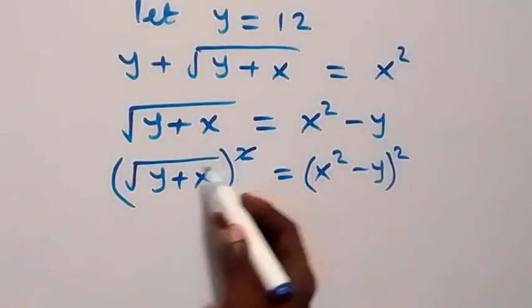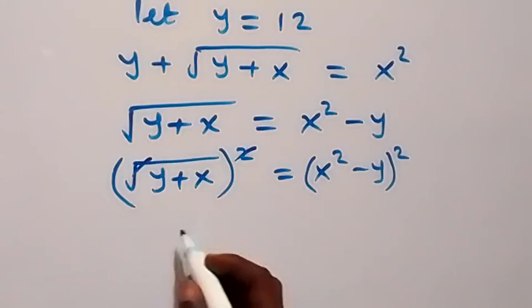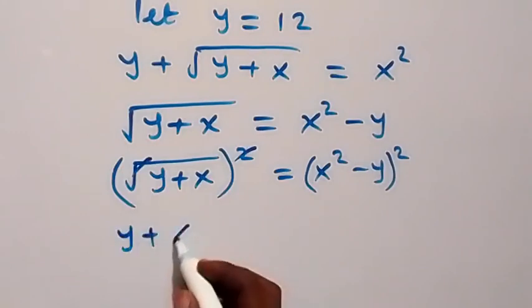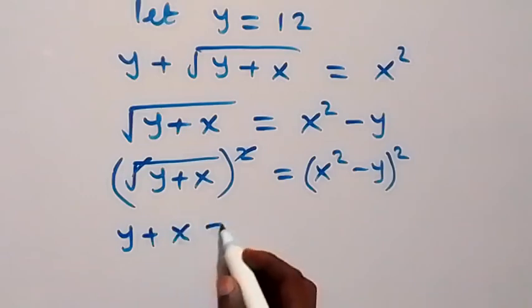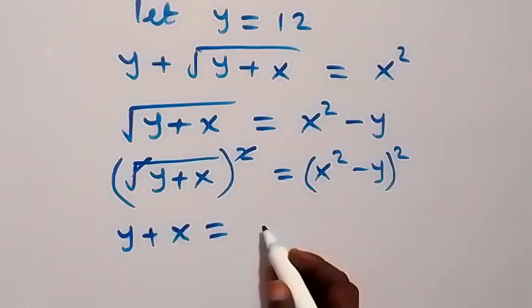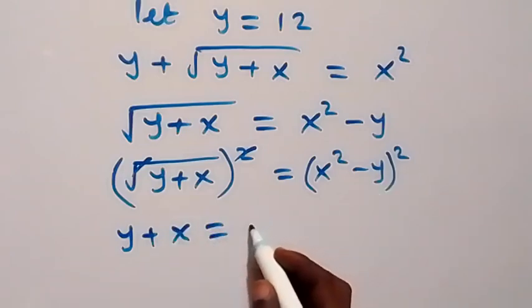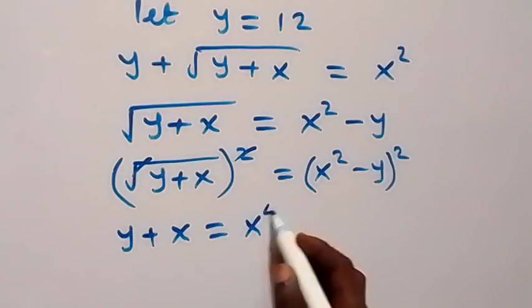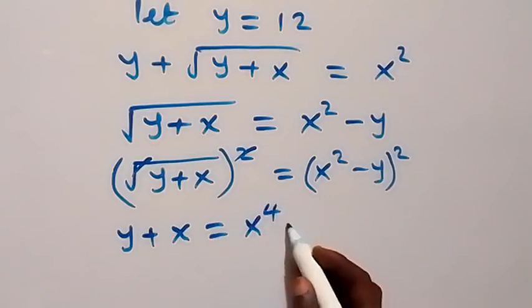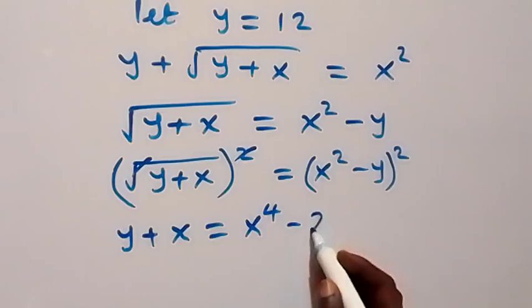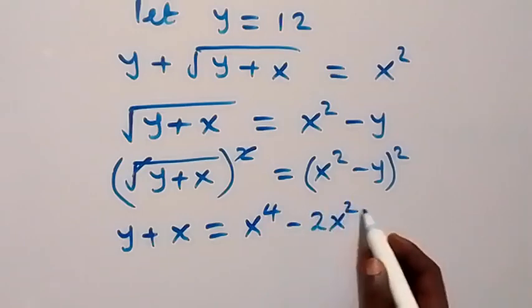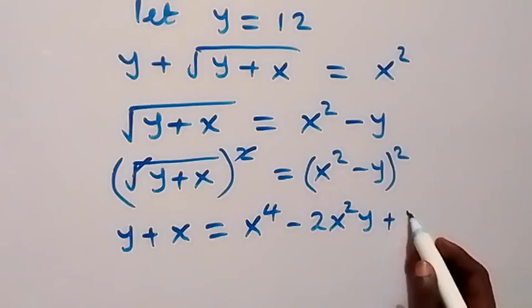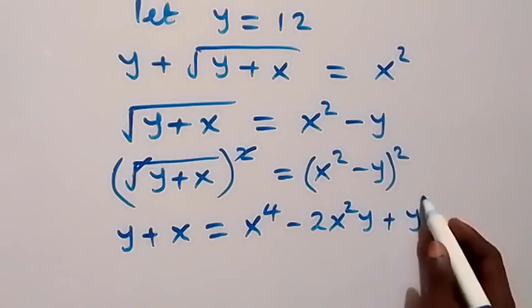The square here cancels the square root, then this is left with y plus x, which now equals the expansion on the right side. The expansion becomes x raised to power 4, then minus 2x squared y, then plus y squared.